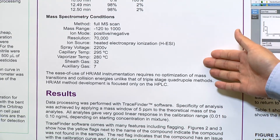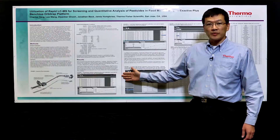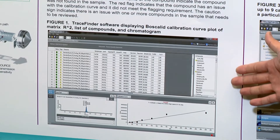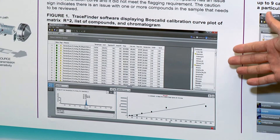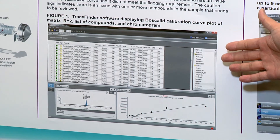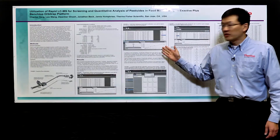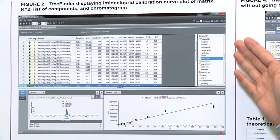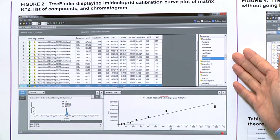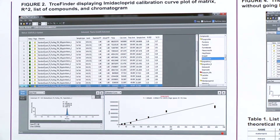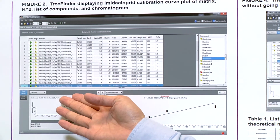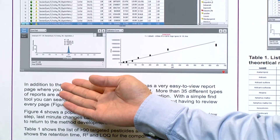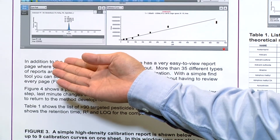The ionization is ESI. The results are processed in our software called TraceFinder, which is a quantitative software for quick processing and routine lab workflow. In this diagram we show the results of the run with a component on the right side and the actual sample on the left side, along with a calibration curve and the integrated peak shown here.